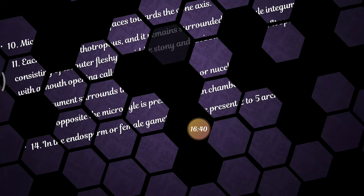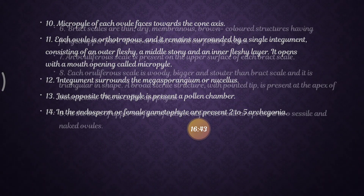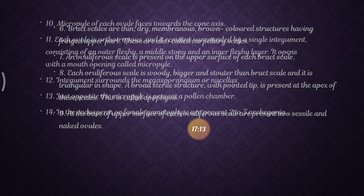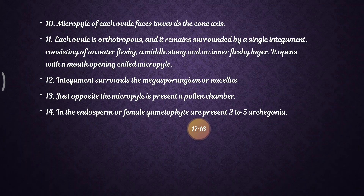The bract scales are thin, dry, membranous, brown-colored structures with a finger-like upper part, also called carpellary scales. The ovuliferous scale is present on the upper surface of each bract scale, and on the base of the upper surface of each ovuliferous scale are present two sessile and naked ovules. The ovule and the life cycle of Pinus will be covered in the next upcoming slides.